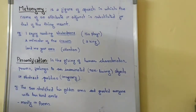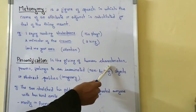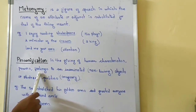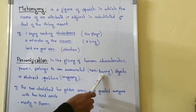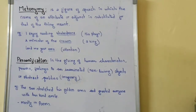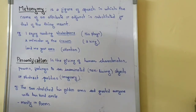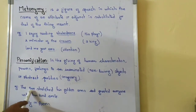Personification is also a figure of speech. It is the giving of human characteristics, powers, or feelings to inanimate or non-living objects or abstract qualities which are imaginary. This is generally done by authors or poets who give characteristics, powers, and feelings — which belong to living things — to non-living things or imaginary qualities.